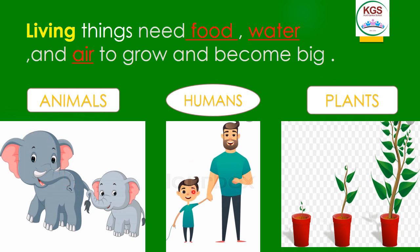How about those boys? It's like elephants — this one received food, water, and air and he became big like this one. How about plants? Look at this small plant — it's the same with animals. This one received food, water, and air to grow and became big.